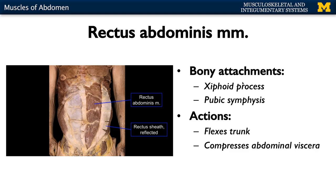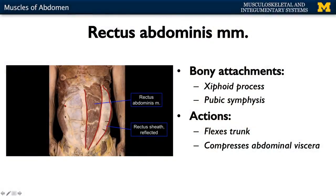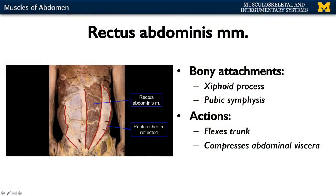If you reflect the rectus sheath, as is happening here, you're looking at the straight muscle of the abdomen — your rectus abdominis. It has a similar length to the rectus sheath. Here the rectus sheath is intact, and here we've reflected it.